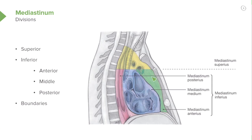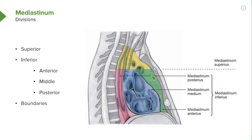The anterior mediastinum is shown here in green, and it is an area that is between the sternum anteriorly and the pericardium posteriorly.